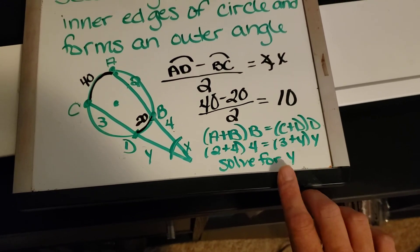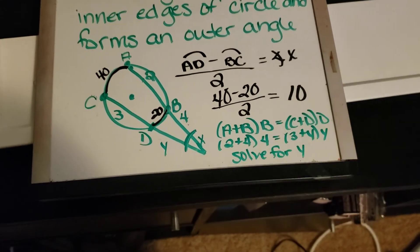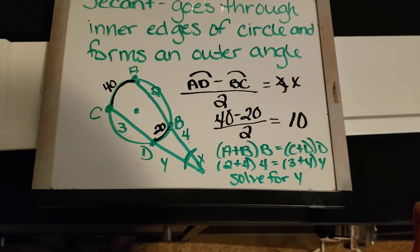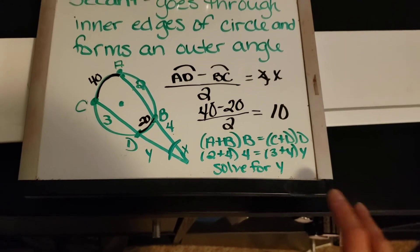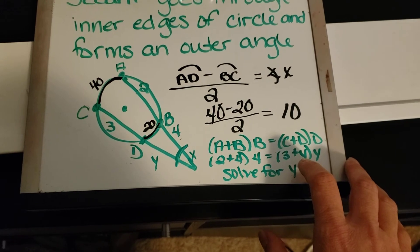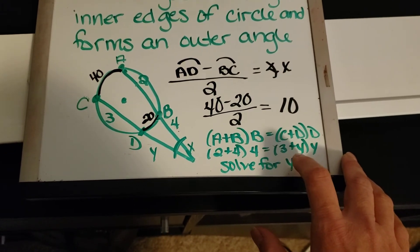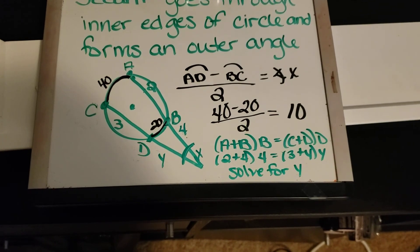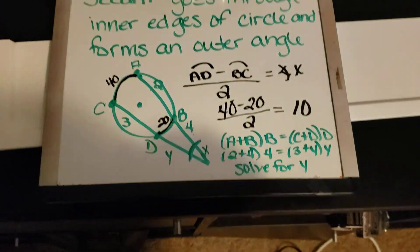How you would do that is you would do your PEMDAS. So your parentheses would be 4 plus 2 is 6. 6 times 4 is 24. And then for this, you would use distributive property. So you would end up with 3Y plus Y times Y would be 2Y. Combine and solve for Y using your addition, subtraction and all that.